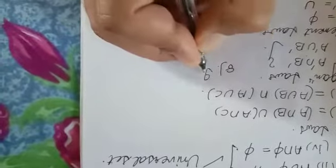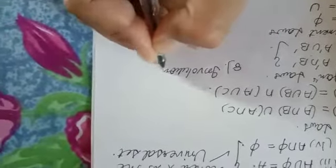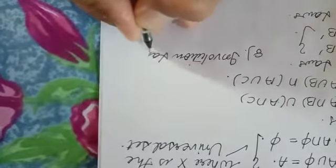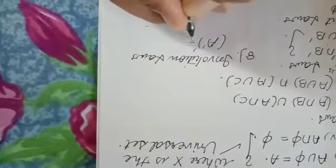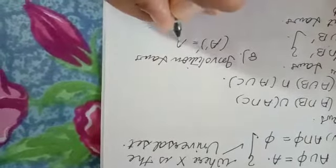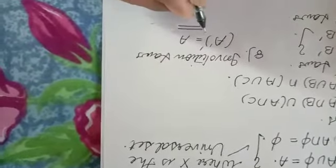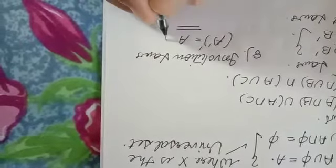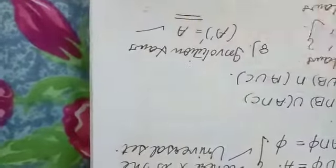The eighth law is involution law. It says that the complement of A complement is always A. Taking the complement twice brings you back to the original set. This is also frequently used in plus-two class. The complement of complement of A always gives A.